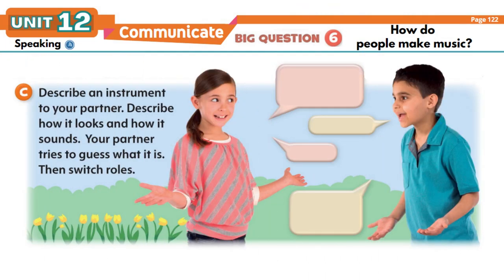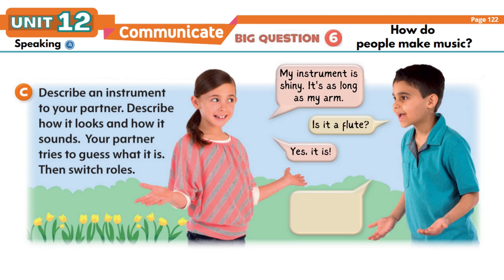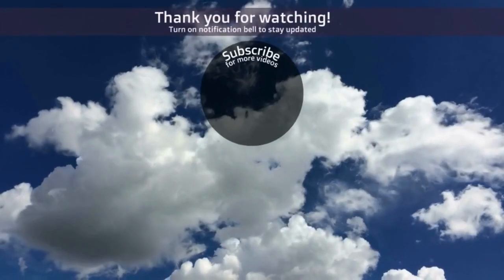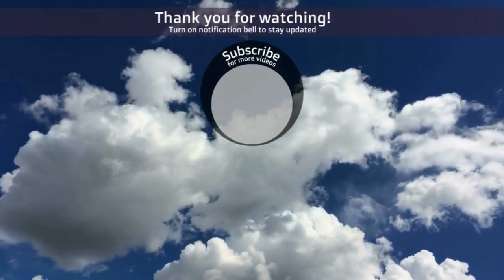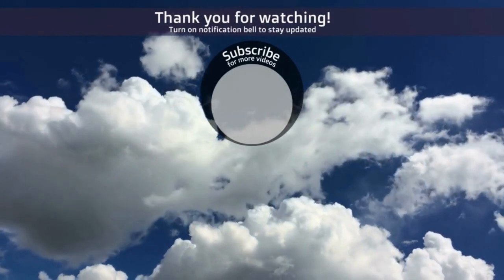Page 122, Speaking C: Describe an instrument to your partner — describe how it looks and how it sounds, and your partner tries to guess what it is. Then switch roles. My instrument is shiny, it's as long as my arm. — Is it a flute? Yes, it is! My turn: my instrument is round and you hit it with sticks. — Is it a snare drum? Yes, it is!